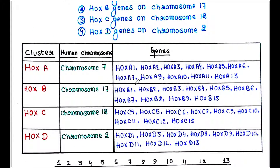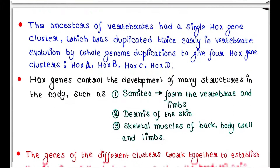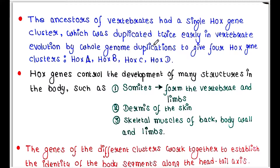Here is the chart showing the different Hox A, Hox B, Hox C, and Hox D genes. The ancestors of vertebrates had a single Hox gene cluster, which was duplicated twice early in vertebrate evolution by whole genome duplications, giving rise to four Hox gene clusters: Hox A, Hox B, Hox C, and Hox D.